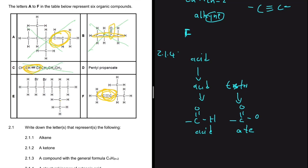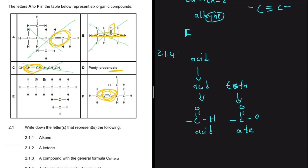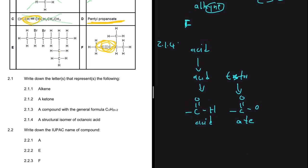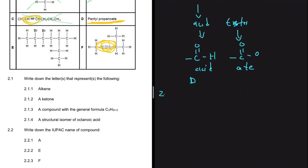Compounds A, B, and C cannot be part of our solution. Looking at D, its name ends with 'ate' — it's an ester — and it also has eight carbons, just like octanoic acid. So the answer for 2.1.4 is D.